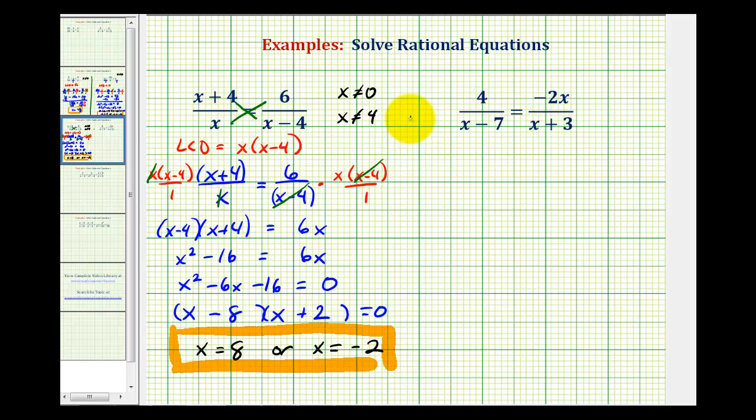Now let's take a look at our second example. Again, because we have a proportion here where we have two fractions equal to each other, we could just cross multiply, meaning 4 times the quantity x plus 3 must equal negative 2x times the quantity x minus 7.